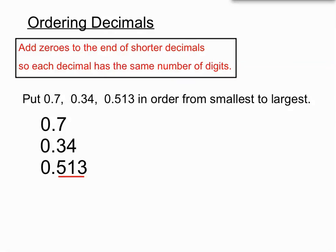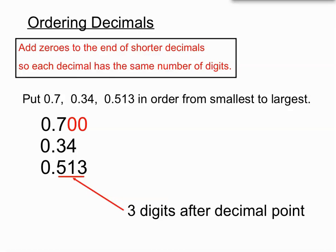You can see that the bottom number 0.513 has 3 digits after the decimal point. We would say it has 3 decimal places. So what we are going to do is add zeros to the end of that 0.7. We are going to add a couple of zeros so that it has 3 digits after the decimal point as well. We are doing that so it is easier to compare the digits.